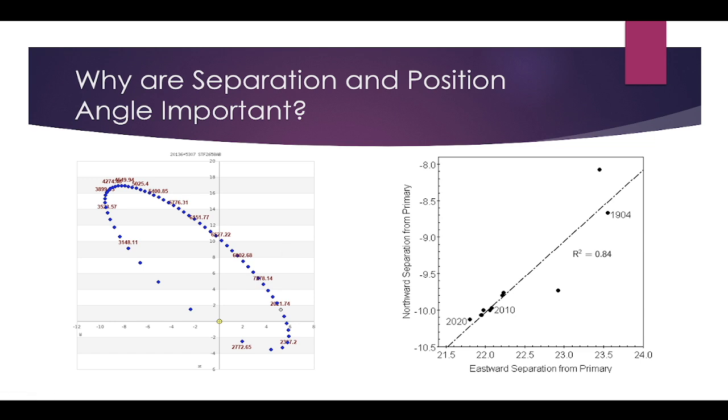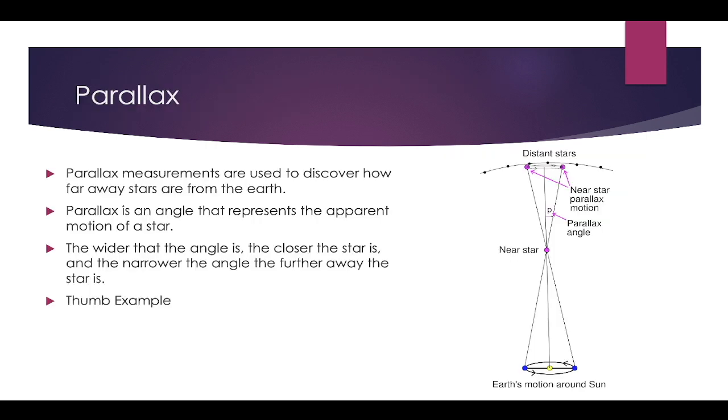And so along with separation and position angle, we have other measures for determining how related double stars are. One of these is parallax. We want to find out how close the stars are actually to one another in physical distance. Parallax is a method that uses angles to measure the actual distance that stars are away from Earth. By measuring the distance that one star is away from us and then measuring the distance that the other star is away from us, we can find out the distance between the two. If stars aren't fairly close, there's no way that they can be orbiting one another.